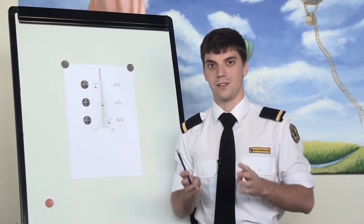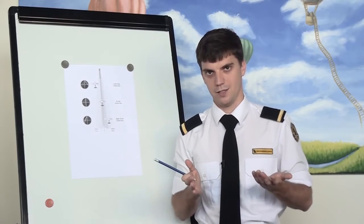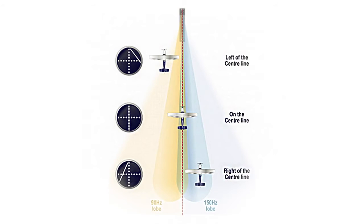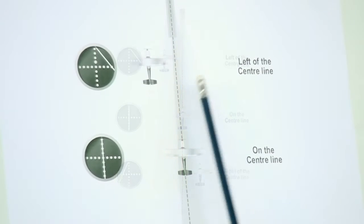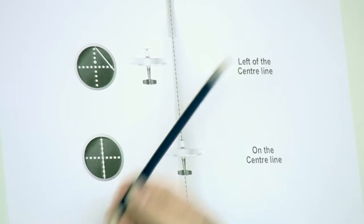Localizer shows the lateral displacement of the aircraft from the center line as a part of instrument landing system or ILS. Localizer itself consists of two overlapping beams. One amplitude modulated at 90 Hz and second one at 150 Hz. If there is more 90 Hz modulation than 150 Hz, needle is deflected to the right, giving us a fly right command.